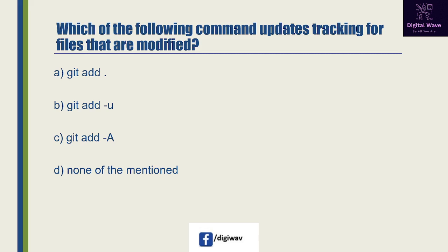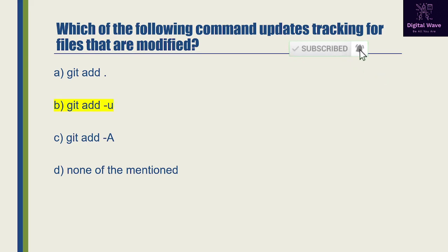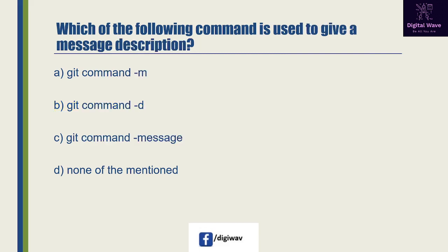Next question: which of the following command updates tracking for files that are modified? Option A is 'git add', option B is 'git add -u', option C is 'git add -a', and the last option is none of the mentioned. The right answer will be B, because the git add command adds changes in the working directory to the staging area.